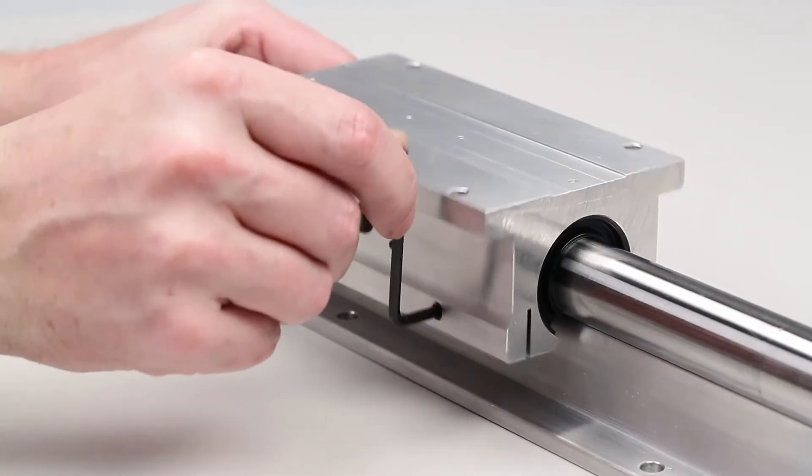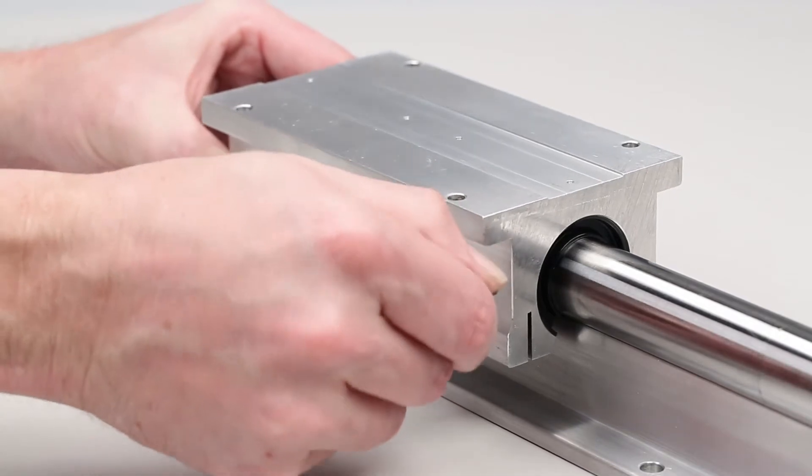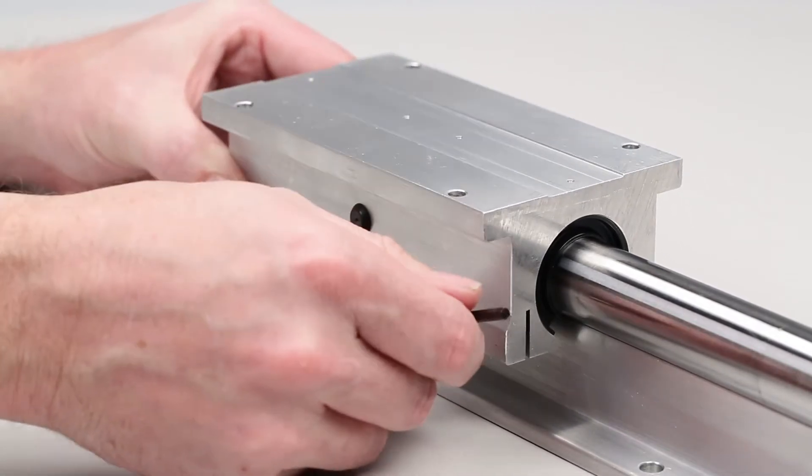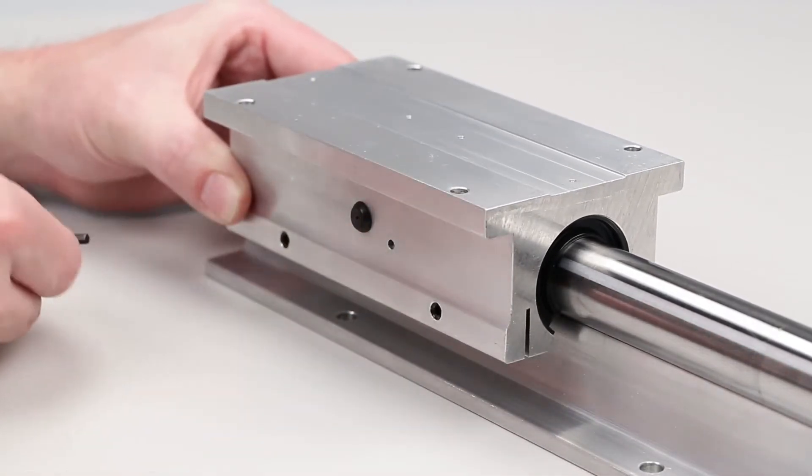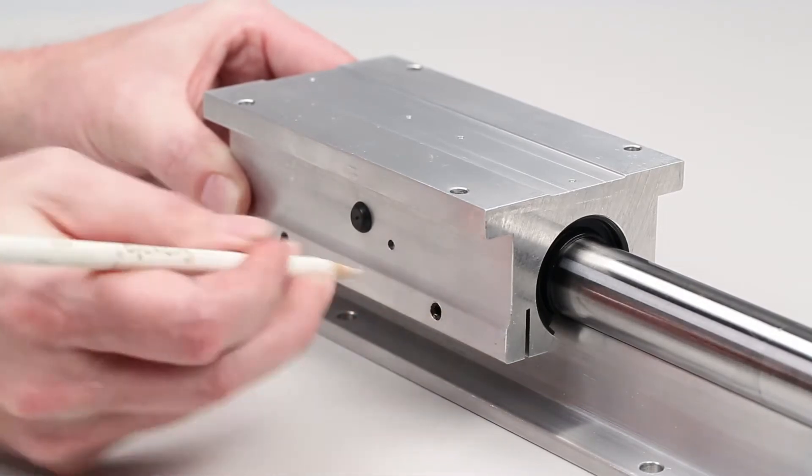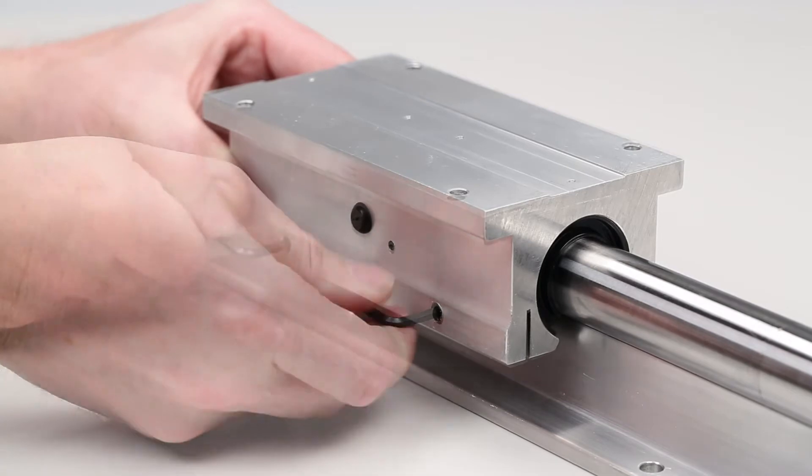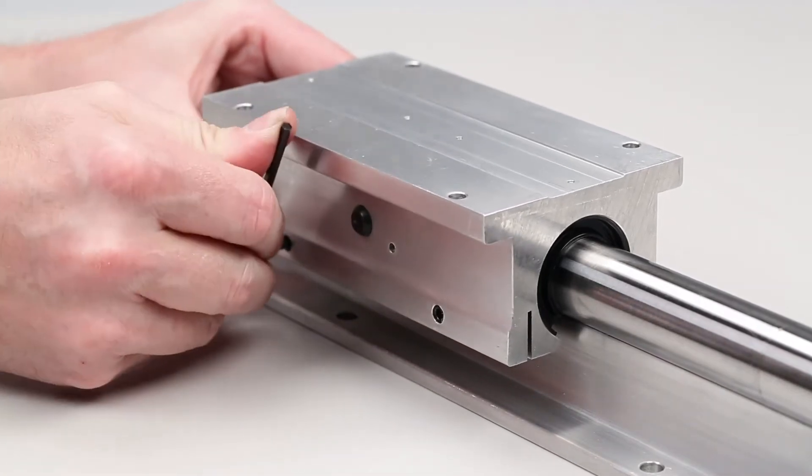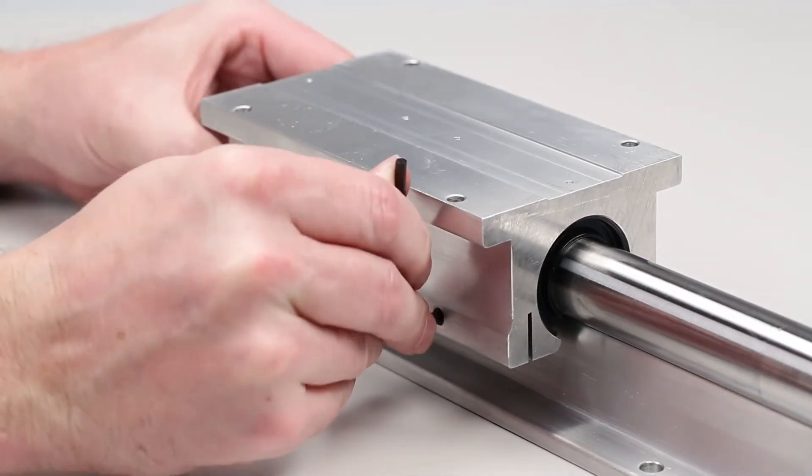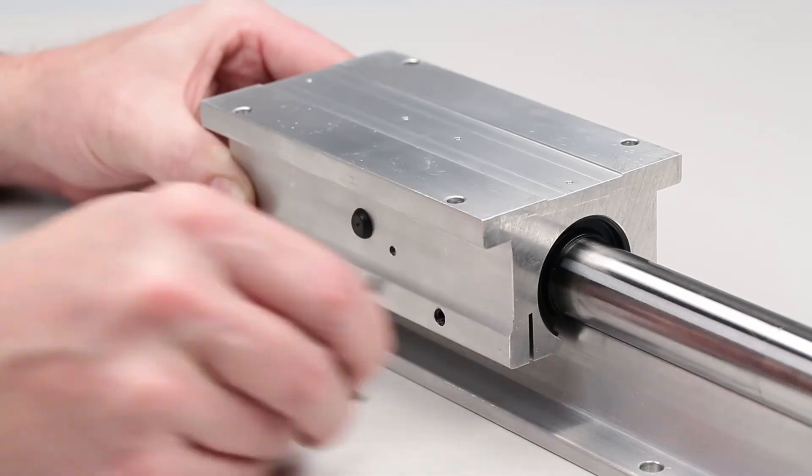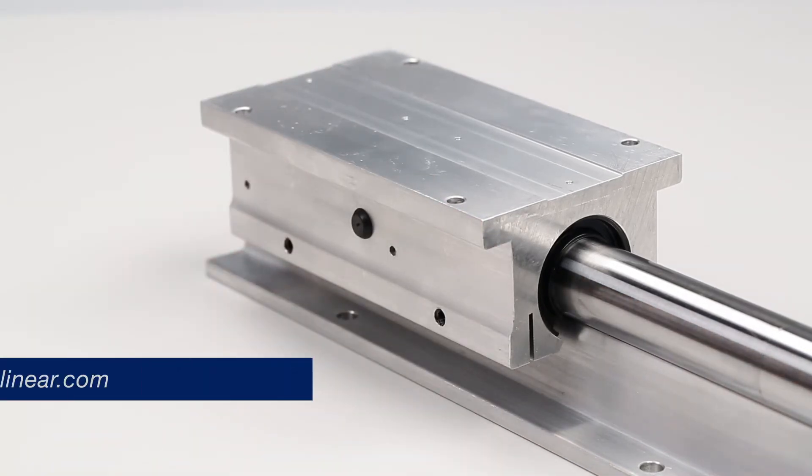If using a twin pillow block, one linear bearing should be adjusted with the other one loose. The position of its adjusting screws, 10 o'clock or 2 o'clock for example, or a torque wrench reading should be noted. Then, loosen it and adjust the second linear bearing. After the second linear bearing is adjusted, the first bearing is then returned to its proper setting.